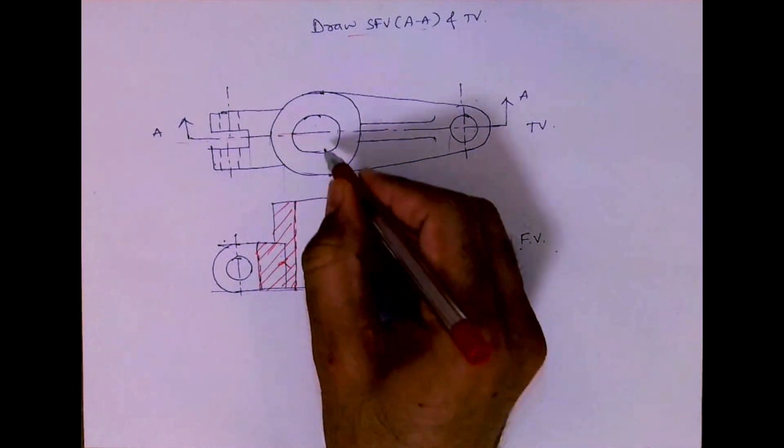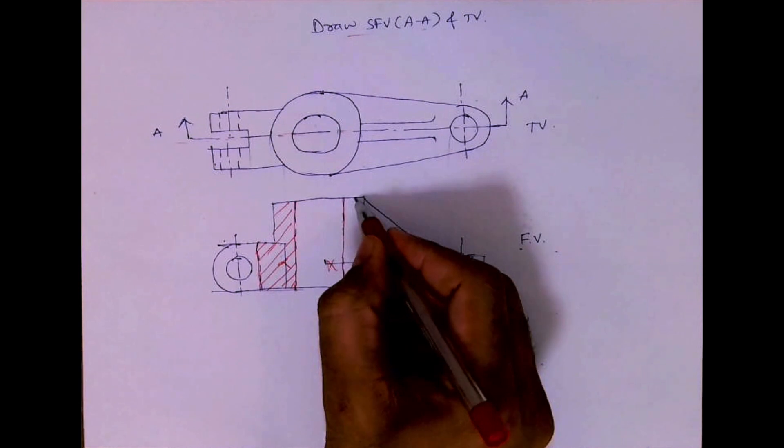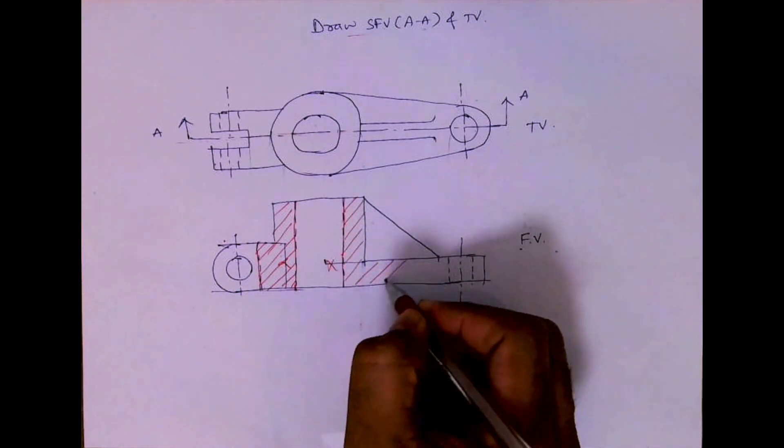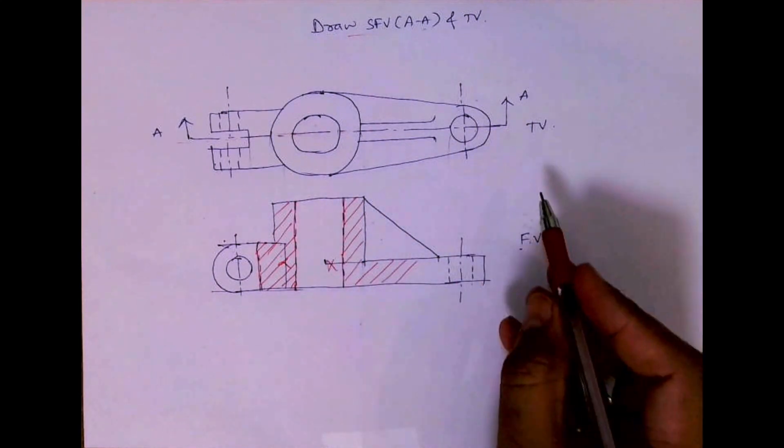Here nothing is getting cut, so this will go away. This is getting cut, so this will be hatched. Now this is a continuous thing, so I will hatch this lower plate. This won't be hatched, see this.